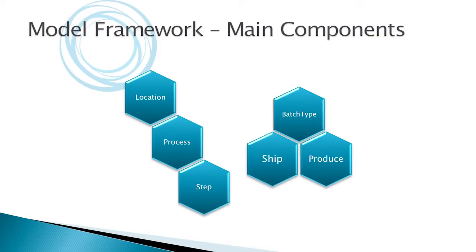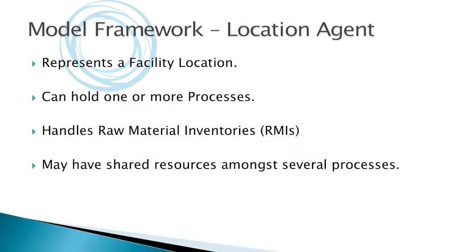There are six primary agent types in the model: locations, processes, steps — all hierarchical to each other — then batch types, shipping batches, and production batches. The location agent is basically a facility location; it can have multiple processes, handles raw material inventory, and holds shared resources. One shared resource in particular was initially thought to have a huge impact on their issues.